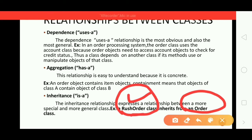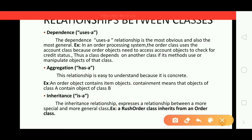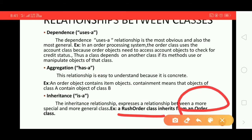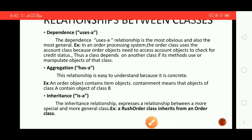The rush order class uses the 'is a' relationship. It inherits all the methods from the order class into the rush order class, and it also uses its own special methods to complete the process. This is how we can use relationships between classes.